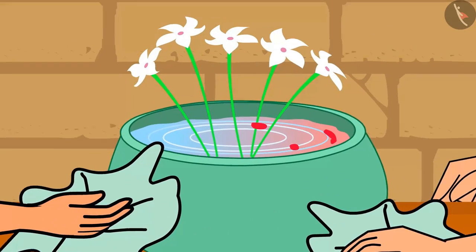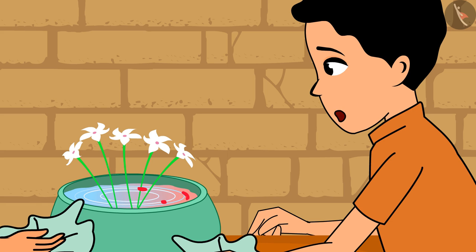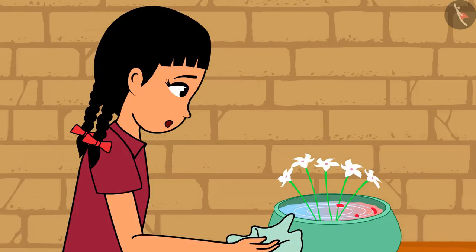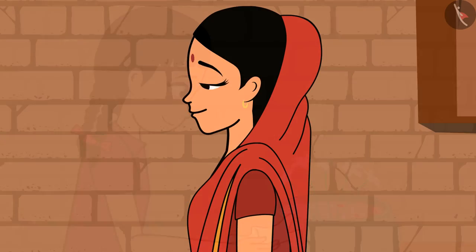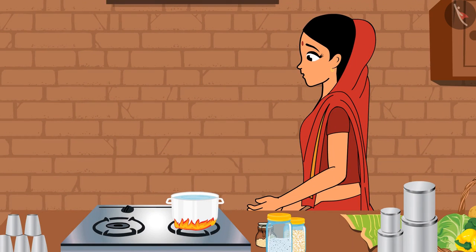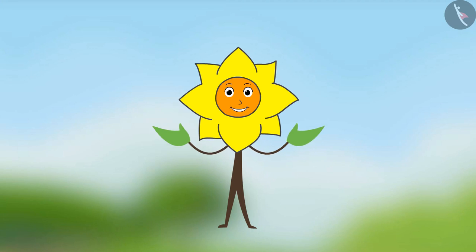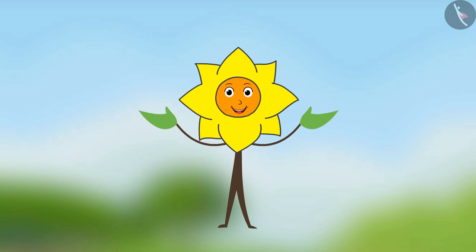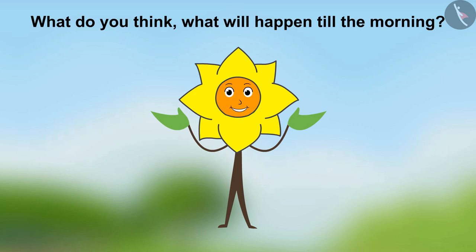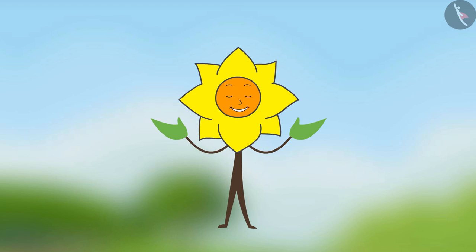Didi, look — the water in the flower vase has also become red! It looks like a few drops of the red ink fell in the water too. Children, come and eat your dinner, you have to go to school tomorrow. Let us go, Ramesh, we shall look at this later. Did you notice, friends? The water in the flower vase became red. What do you think will happen by morning?